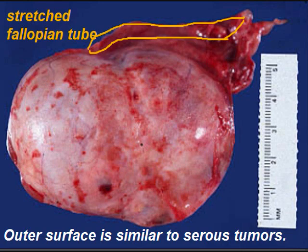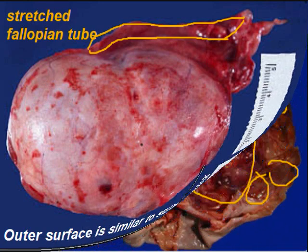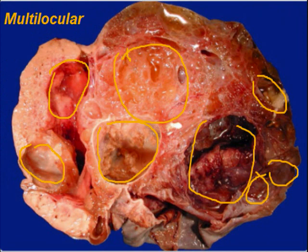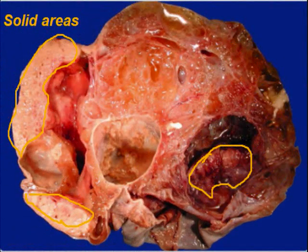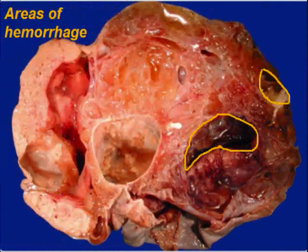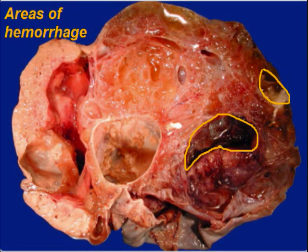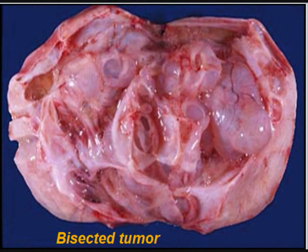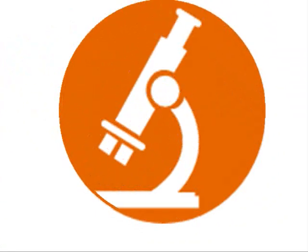This is the ovarian biopsy specimen. It is similar to serous cyst adenocarcinoma, but when you cut it, it is multilocular. You can see there are multiple fluid-filled pockets as well as solid areas, and there are areas of hemorrhage. So it is partly solid, partly cystic, filled with thick mucinous fluid. For comparison, this is a benign mucinous tumor — you can see there is a thin-walled loculi and there are no solid areas.